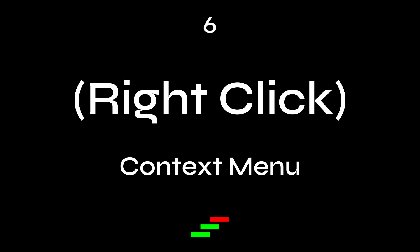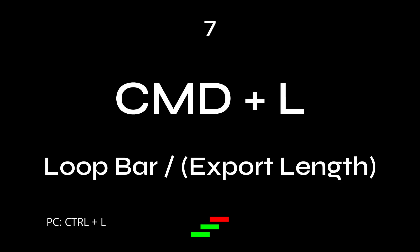Six: right-click — the context menu. Depending where you are, that's going to bring up a different menu. Right-click is your friend in Ableton Live. Just hover over something you want to do, right-click, and the answer might be right there in the context menu.